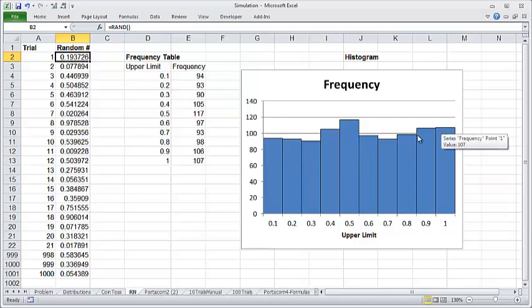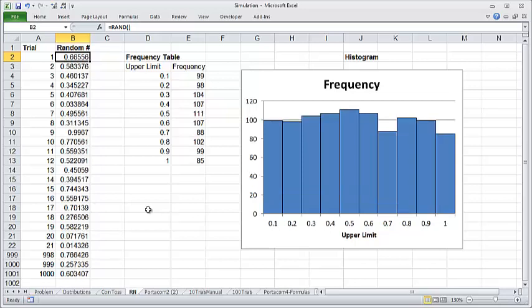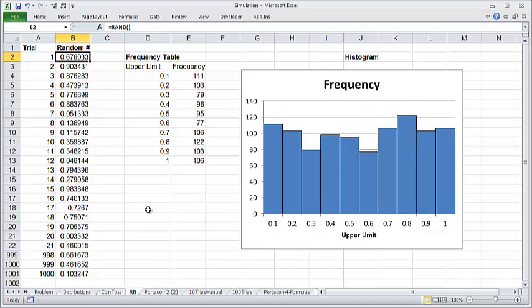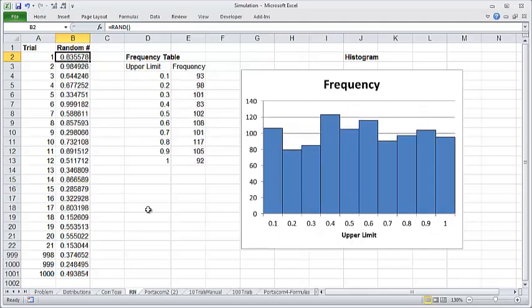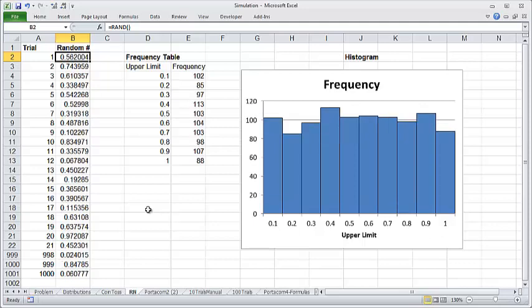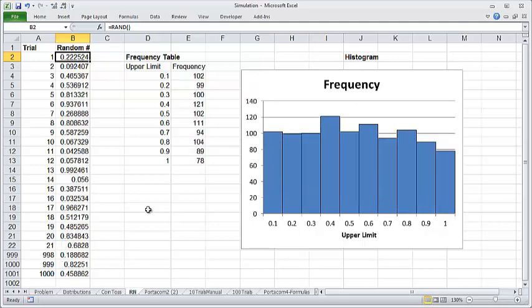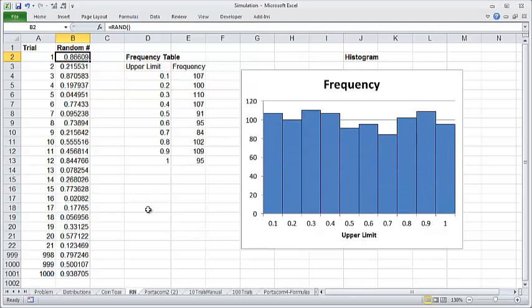Of course, in practice, the frequencies will vary. They will be around 100, but not exactly 100. And when we hit recalculate, like I'm doing now, you could see all the thousand random numbers change and the histogram changes too. So I'm making the histogram dance. This is one of the fun things I like to do when I have some time on my hands.